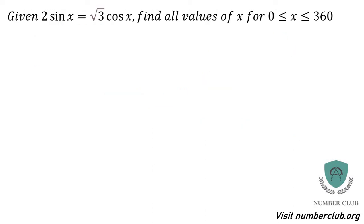Given that 2 sine x equals root 3 cos of x — find all values of x. This looks a bit scary because you've got both sine and cos — different trig ratios. You might try to use inverse sine here, but as soon as you apply inverse sine to cos you're going to end up in a right mess. The way to deal with this is to use the identity that tan of x equals sine of x over cos of x.